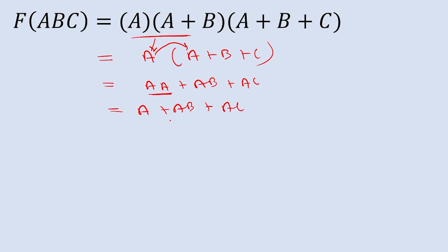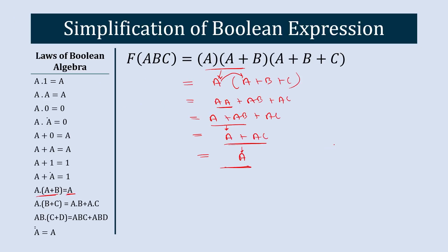A·A equals A, so we get A plus AB plus AC. Now A plus AB results in A, as we saw previously, giving A plus AC. And again, A plus AC equals A by the same law. So this is how you simplify the Boolean expression — the final result is A. There are multiple ways to solve any Boolean expression.